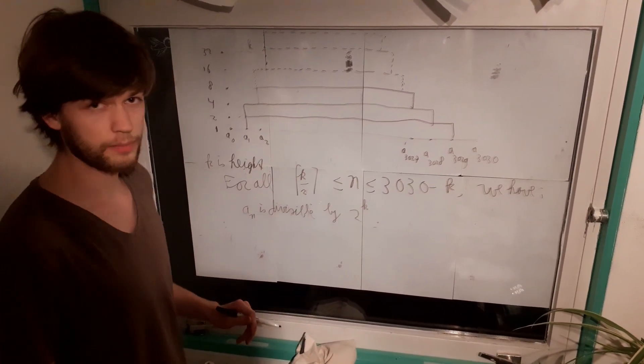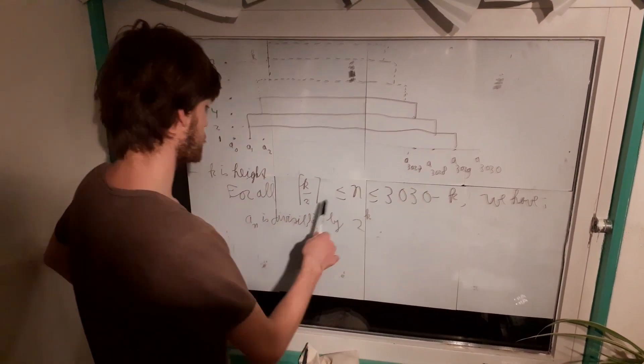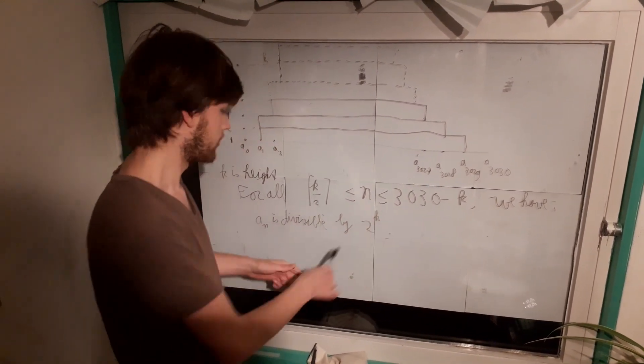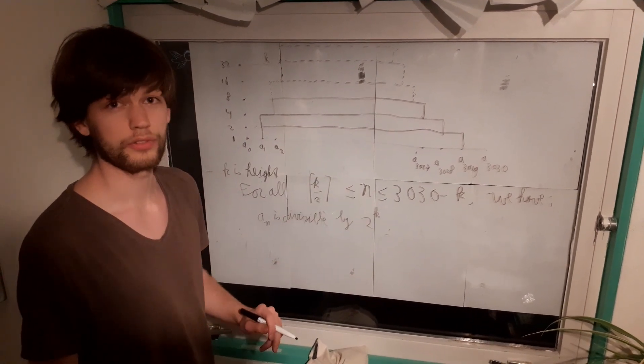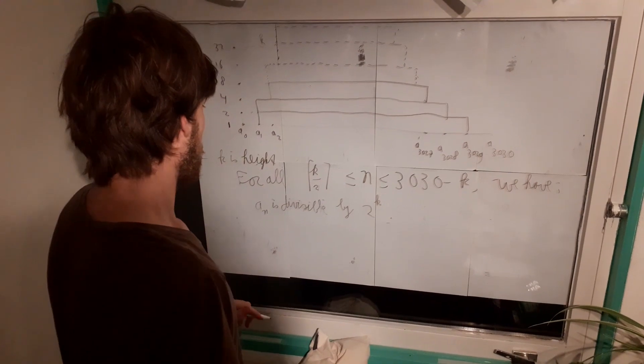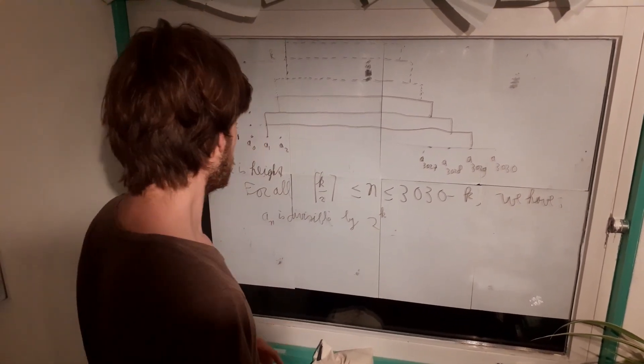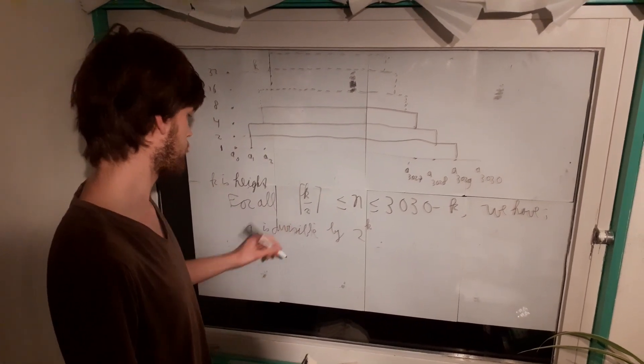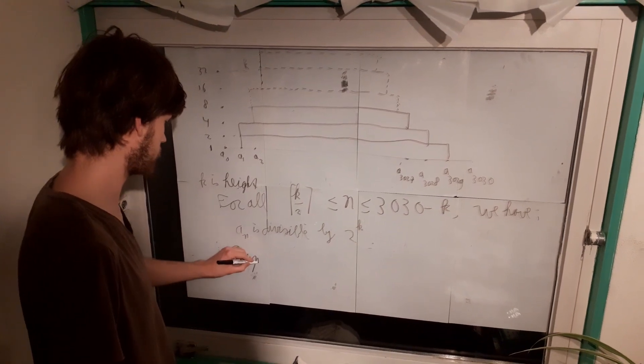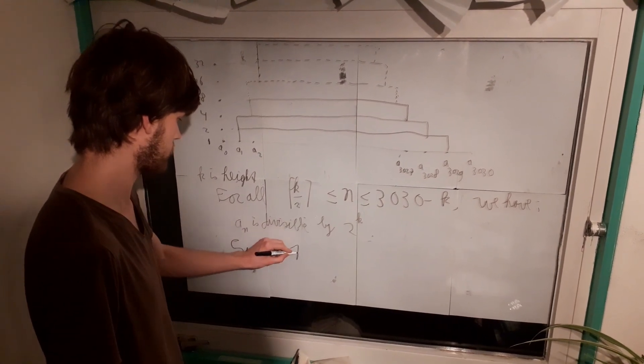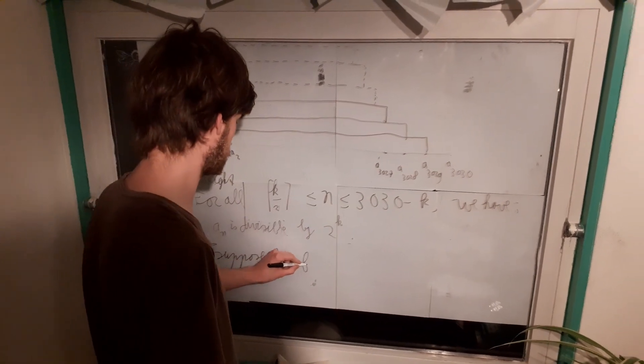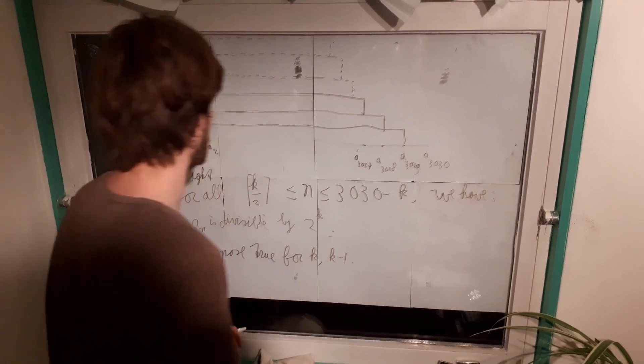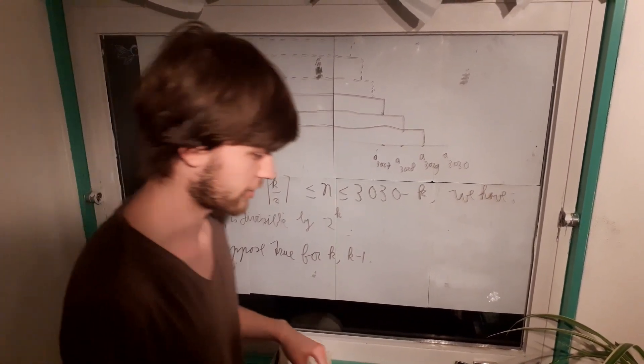Alright. So we're going to prove this by induction, of course. The case k equals 0 is clear because everything is divisible by 1. The case k equals 1 we also need because it's going to be a two-step induction. If we take k as 1, we get for n between 1 and 3029, the number is divisible by 2. This is what we proved on the first page. So now we can do the induction step. And for the induction step, we're going to suppose that it is true for k and also for k minus 1.